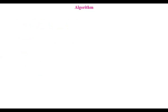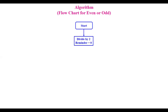In continuation with our algorithm, let us see a flowchart for an even or odd number. Suppose you are given a number and asked to find out whether it is even or odd. The flowchart starts with the given problem: divide that number by two. If the remainder equals zero — yes — then the number is even, because the remainder is zero.